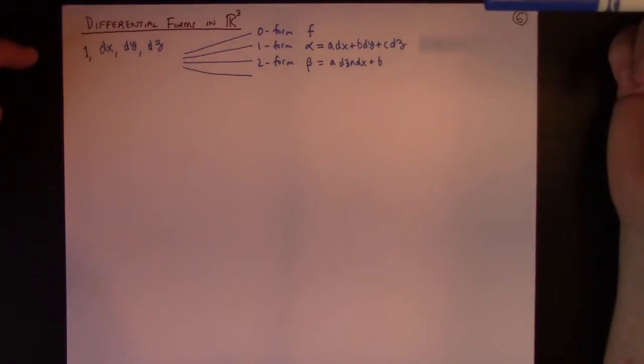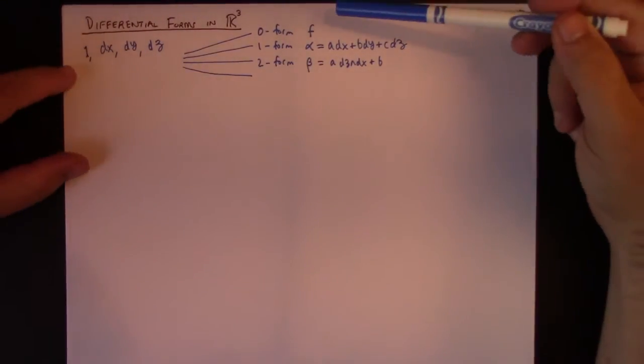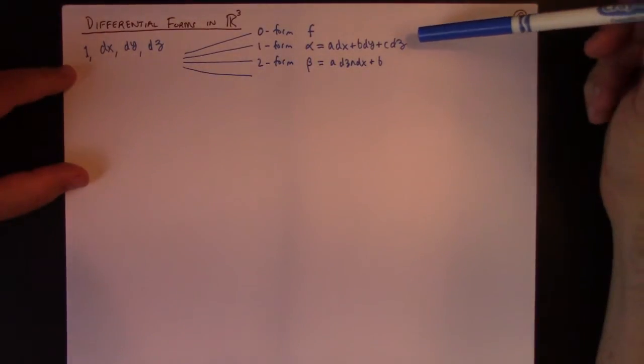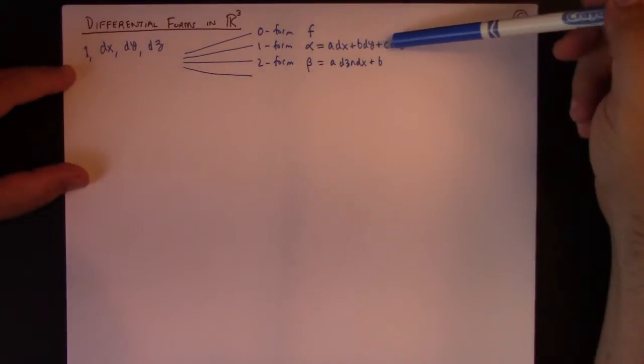So differential forms in R3. You have a 0 form, which is a function. You have a 1 form, which looks like this. Again, A, B, and C would be functions.